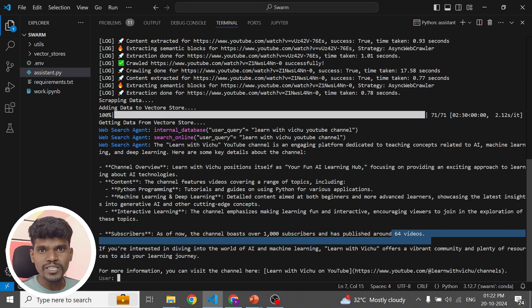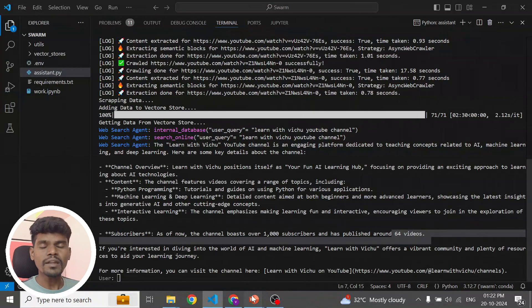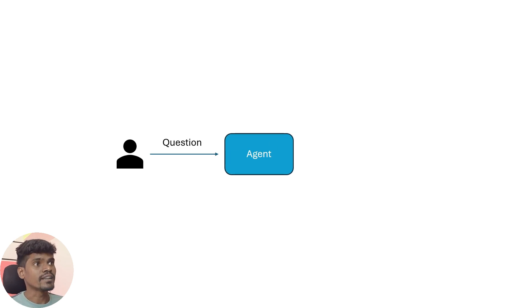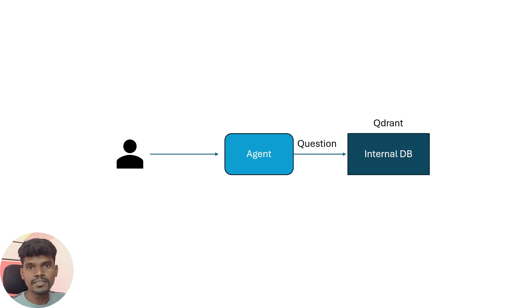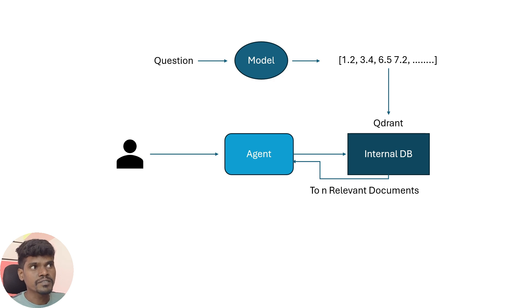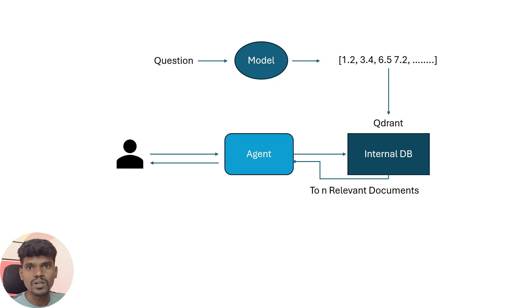Now let me show you the logic behind this agent. So what happens when the user asks a question? The agent will take the user question and it will try to get relevant documents from the internal database. In this case, we are using the Qdrant database. The user question will be converted into embeddings, and this embedding will be used to retrieve the relevant documents from the vector database. The Qdrant vector database will provide us the top relevant documents.